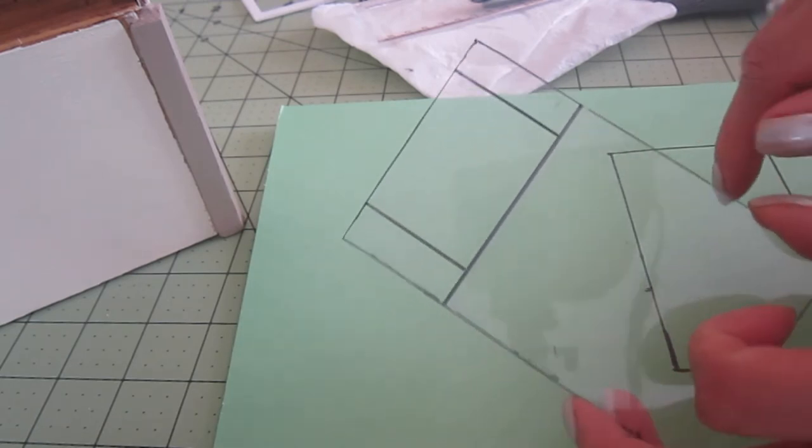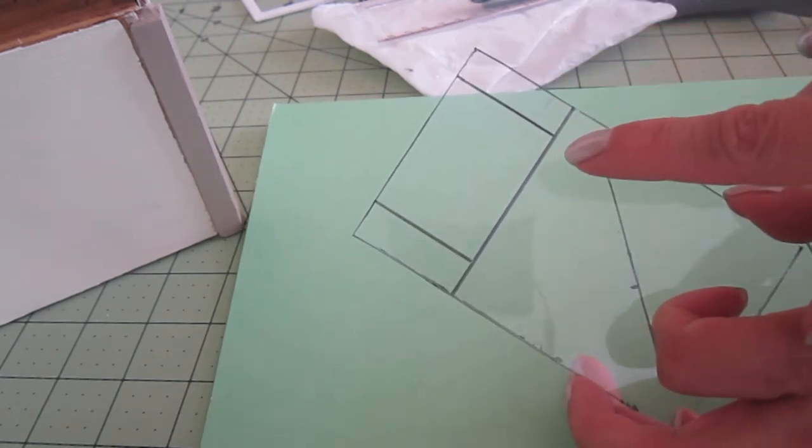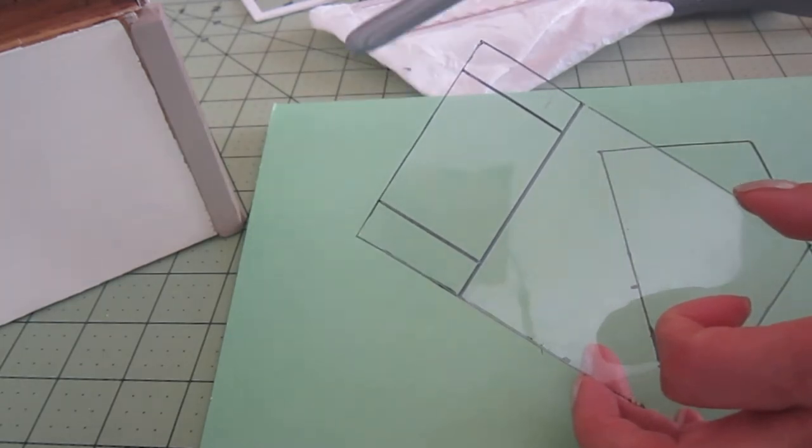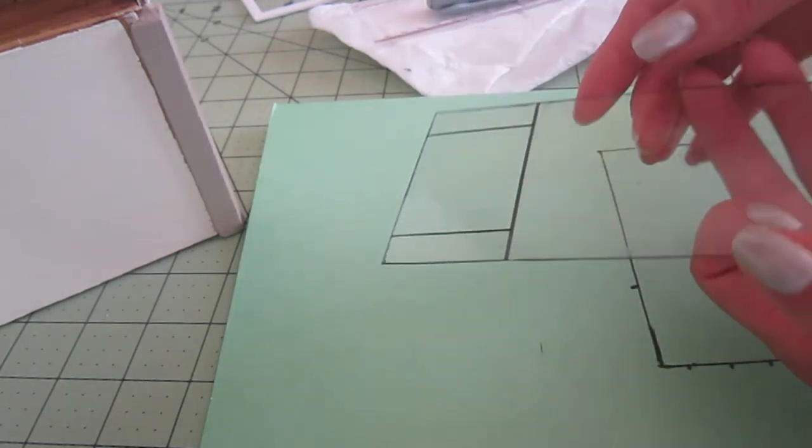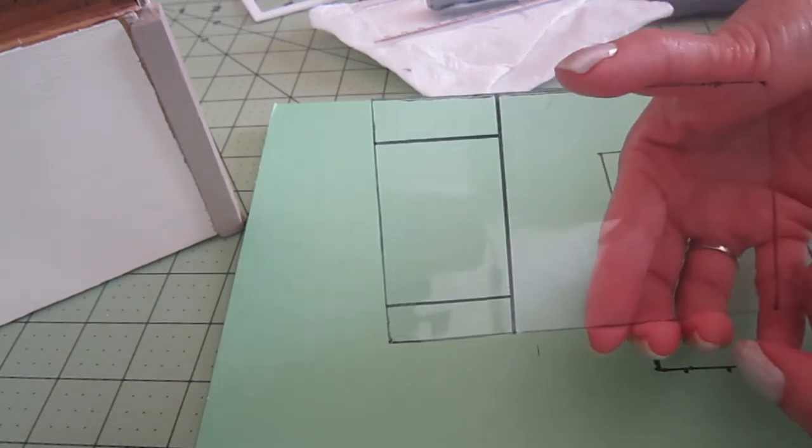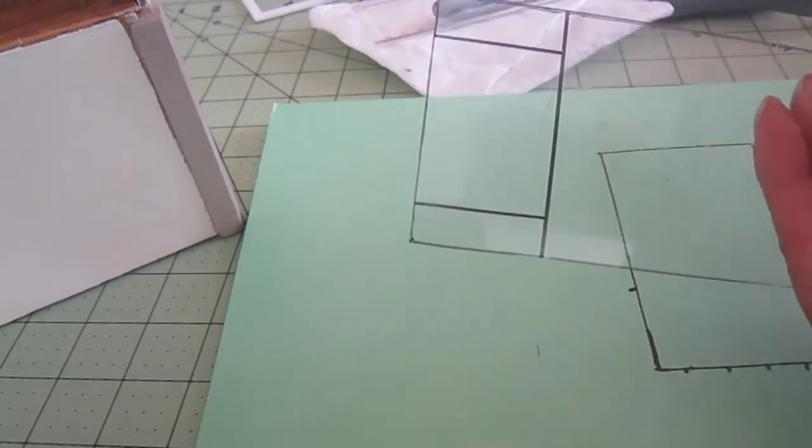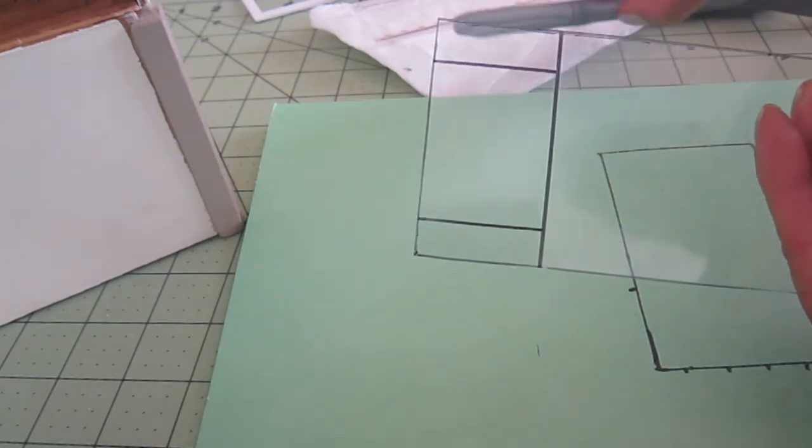I don't know if you can tell the difference, but this is the side on which I already went over with the silver marker. And this is the side where you see the black. And the black is pretty sharp. So I'll go over even on the other side with the silver marker.